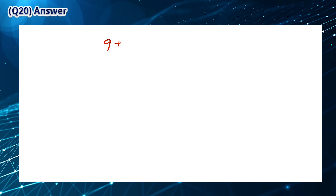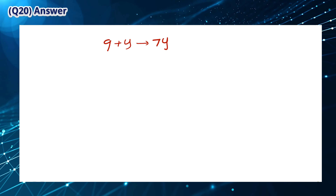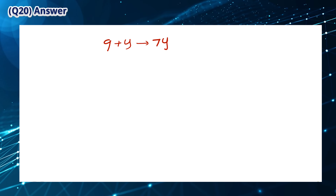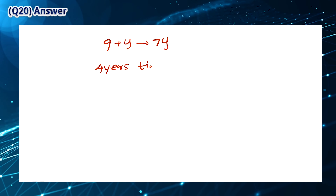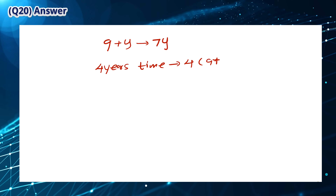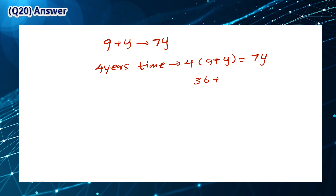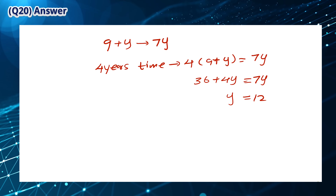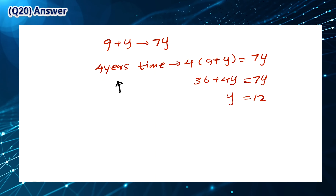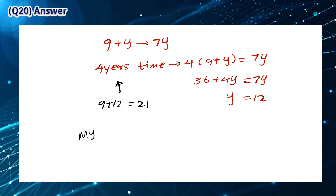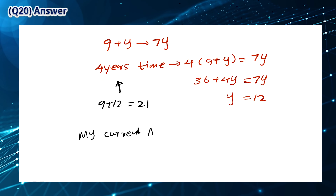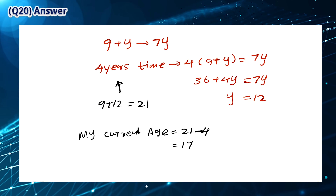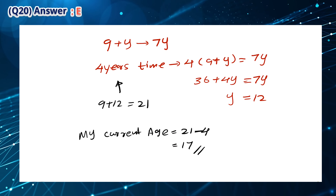When I am 9 plus Y years old, it will be 7Y. In 4 years' time, we can write an equation to find that Y is equal to 12. This means I will be 9 plus 12, which is 21 years old then. To find my current age, I subtract 4 from 21 to find that I am now 17 years old. The answer is E.